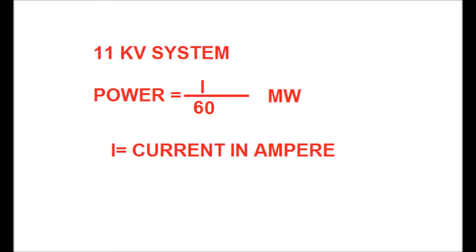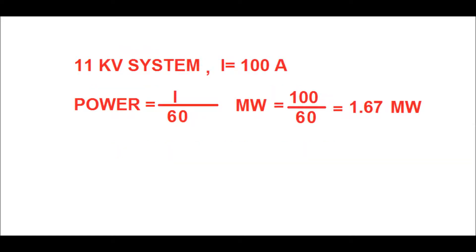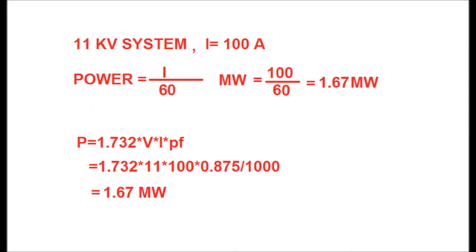Therefore, for an 11 kV system, if current is 100 amperes, then you will get the value of power in megawatts as 100 divided by 60, equal to 1.67 megawatts. Now, how does this factor of 60 come?